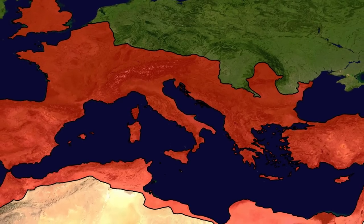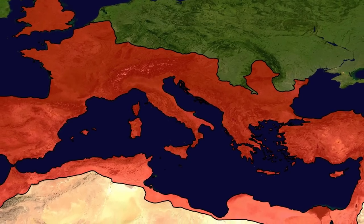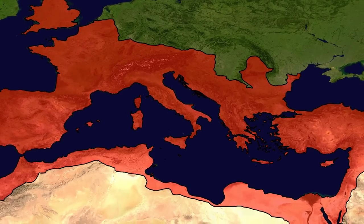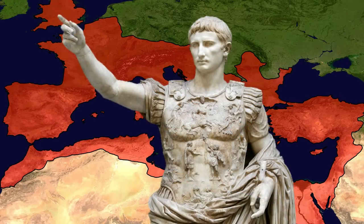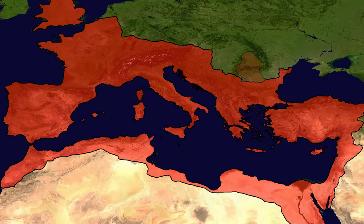Before jumping into the fall itself, we need to look at the Roman Empire on the eve of its collapse. 27 BC is the date that historians traditionally use as the starting point of the Roman Empire. Four centuries later, in 376, the Romans were still in control of the Mediterranean world and could rightly call it Mare Nostrum, so it is tempting to regard the 4th century Roman Empire as the same entity established by Emperor Augustus.